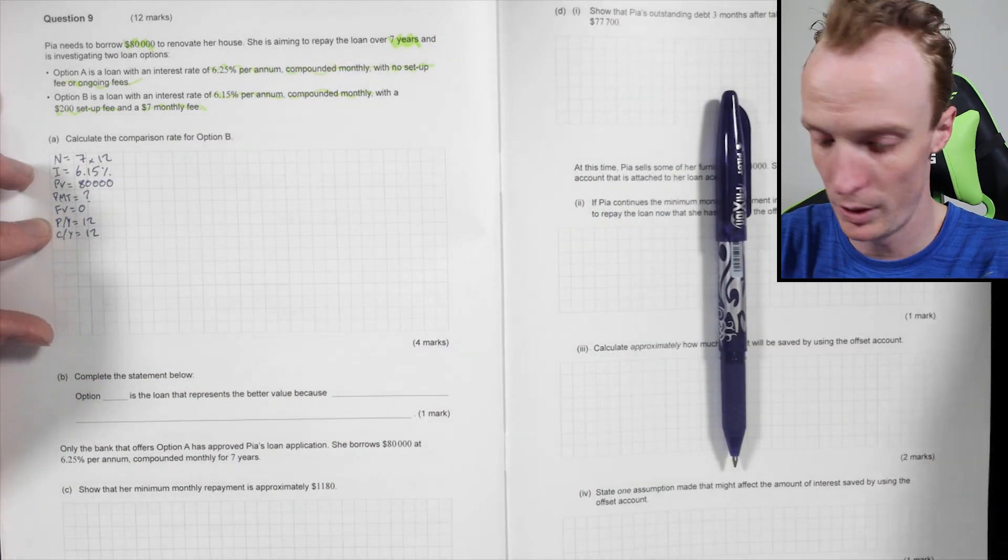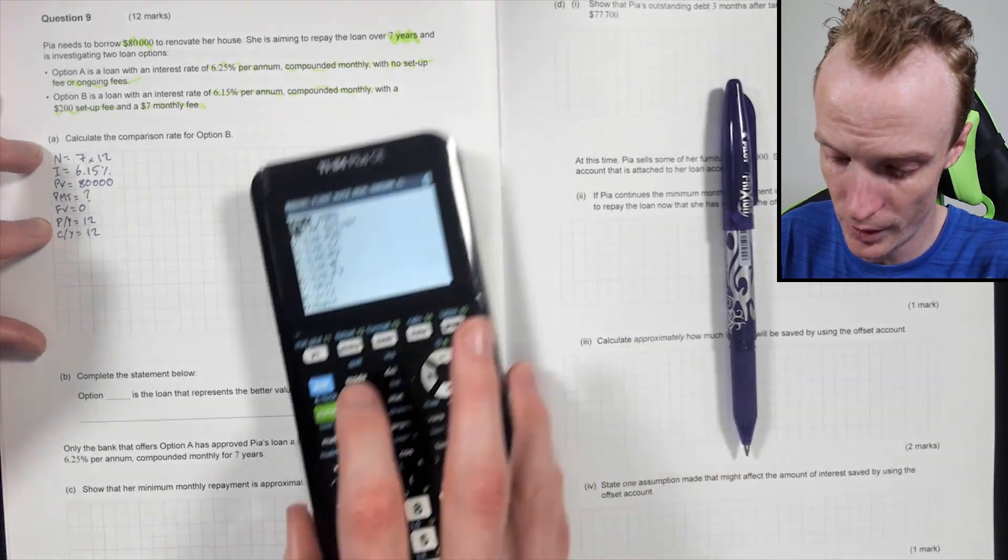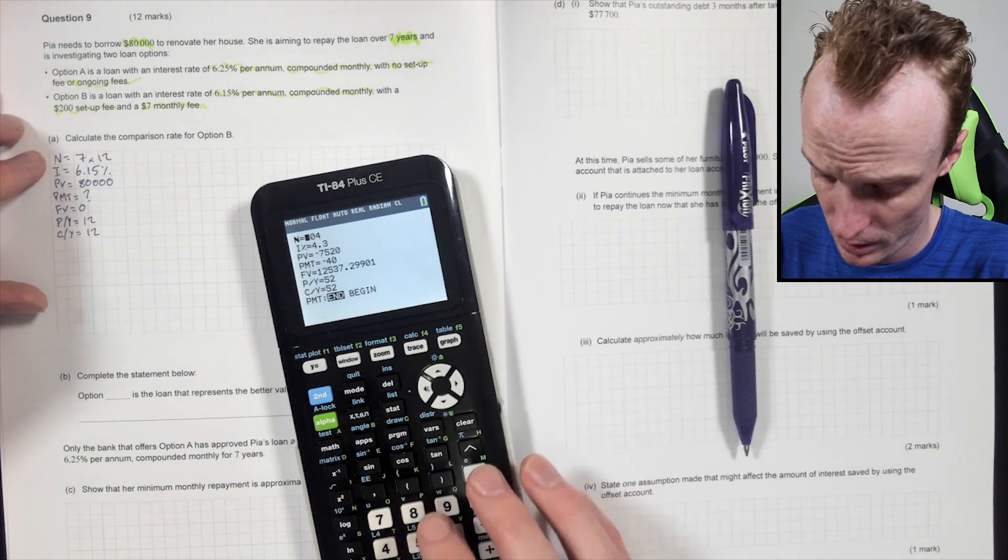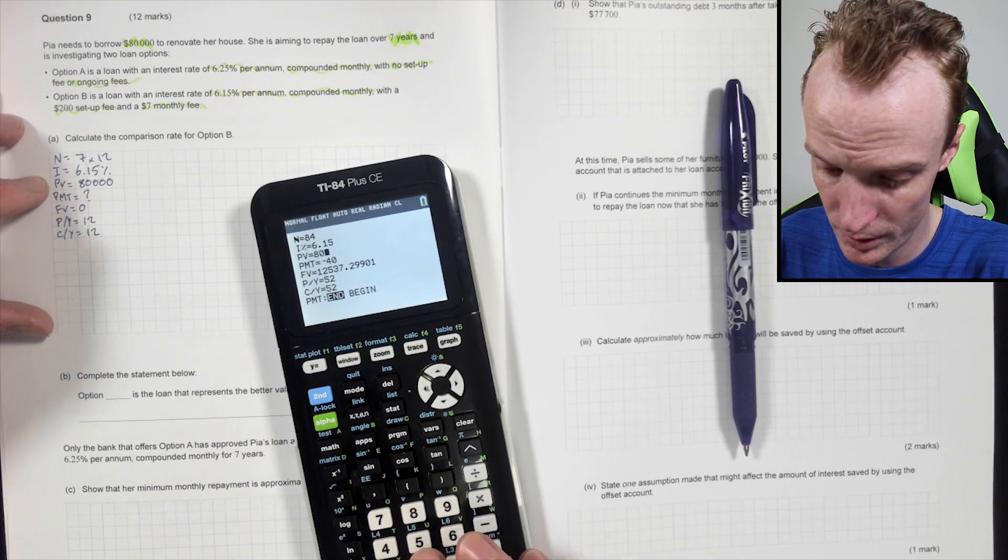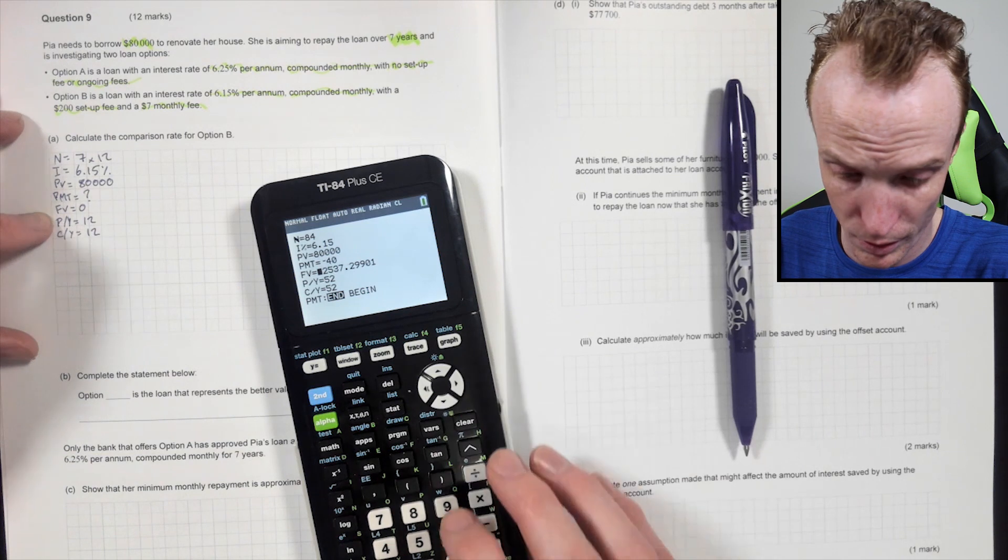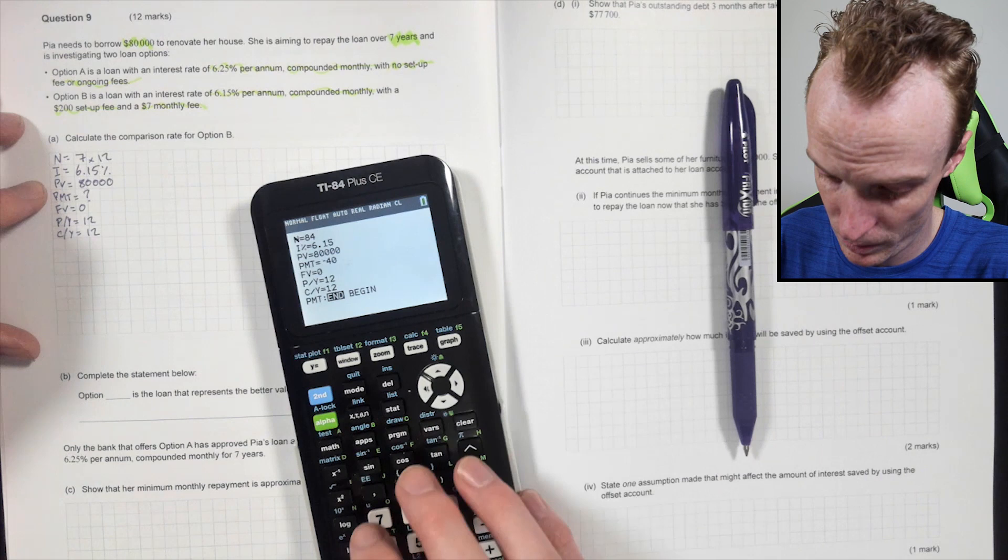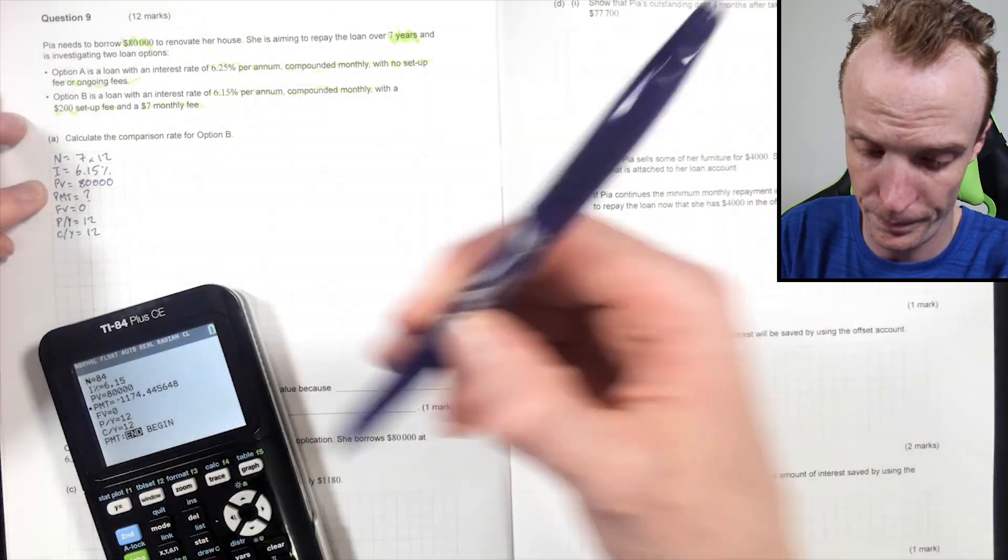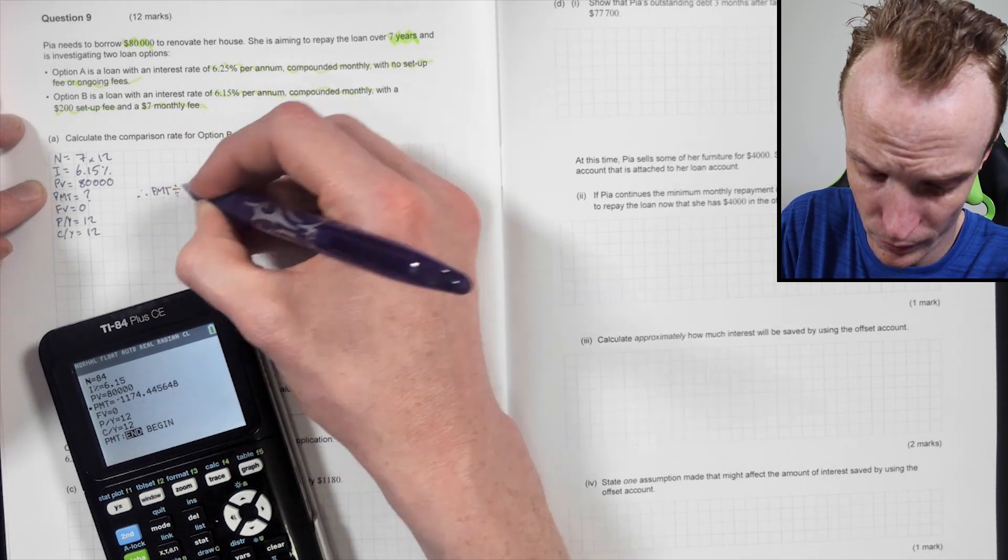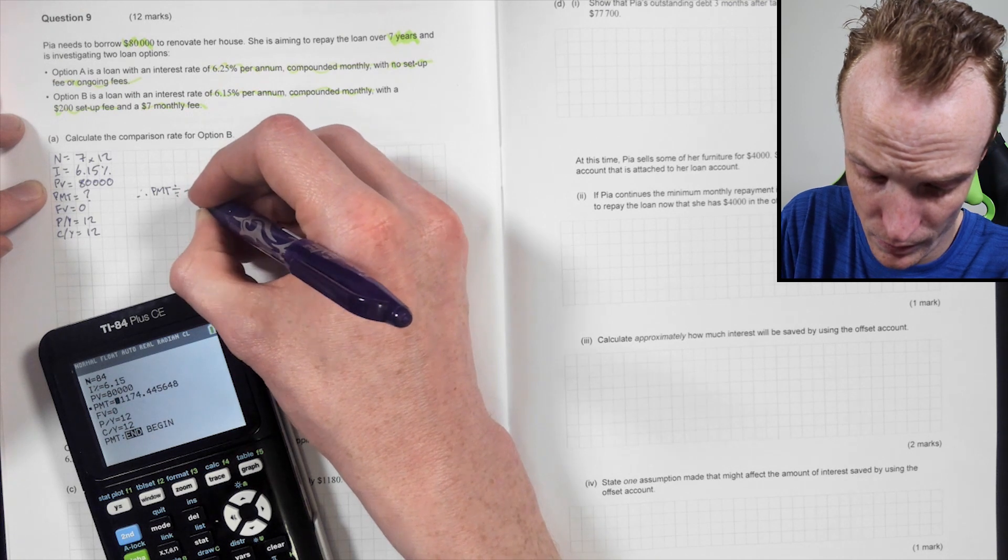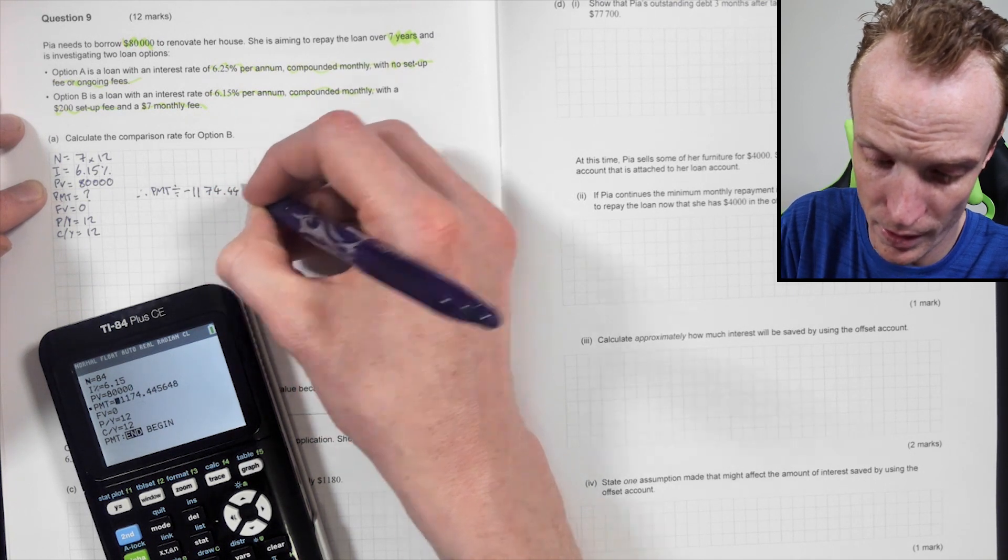So the first thing we do is a TMV calculation. So this is my apps, TMV solver. And we go seven by 12. My interest rate is 6.15%, 80,000. PMT, I don't know. Future value is zero, 12 and 12. The PMT is what I want to calculate. So my PMT is going to be approximately negative 1,174.44 without fees.